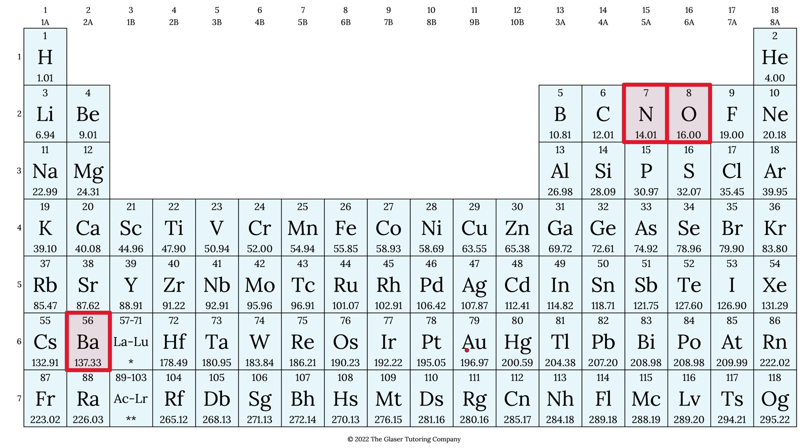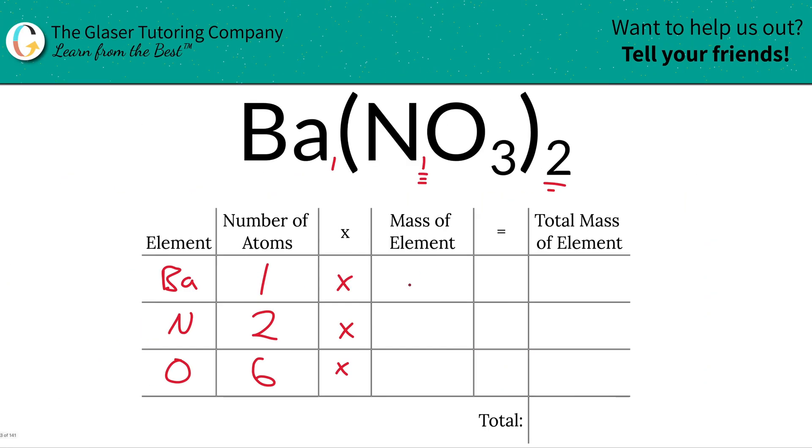So let's plug them in. So we're going to do barium here. Barium has a value of about 137, 137.33. Nitrogen is going to be about 14.01, and then oxygen was 16.